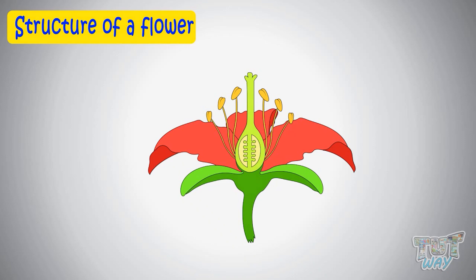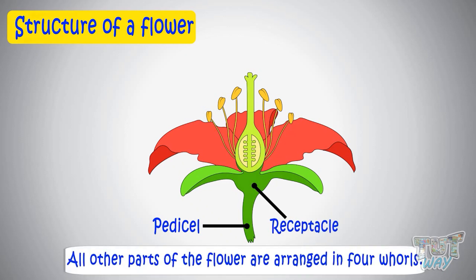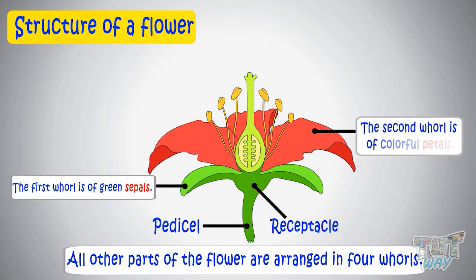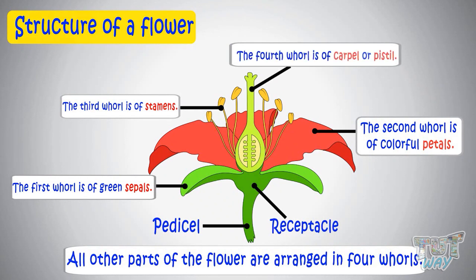We learned the structure of a flower in our last assignment. This is the pedicel, which is a green colored stalk. The broader part is the receptacle, and all other parts are arranged in four whorls. The first whorl is of green sepals, the second is colorful petals, the third is stamens which is the male reproductive part, and the fourth is carpel or pistil which is the female reproductive part.